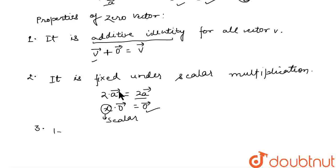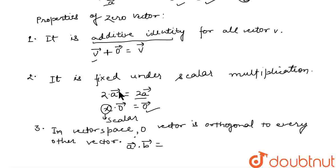The third property is: in vector space, zero vector is orthogonal to every other vector. What does this mean? To prove two vectors are orthogonal, we make their dot product zero. If A dot B equals zero, it means A and B are orthogonal.